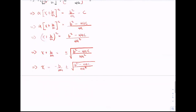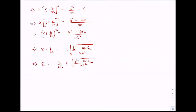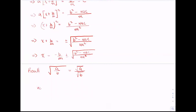We need to recall that when taking the square root of a quotient a divided by b, this is the same as the square root of a divided by the square root of b. So this implies that x equals minus b over 2a, plus or minus the square root of b squared minus 4ac, divided by the square root of 4a squared.